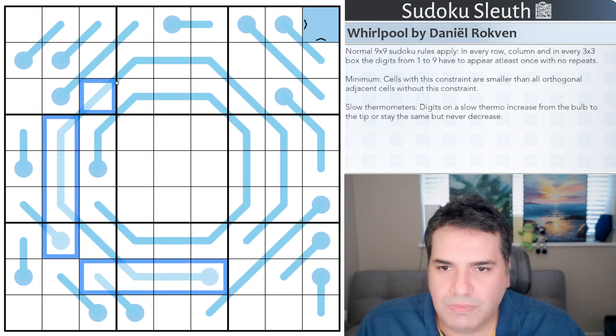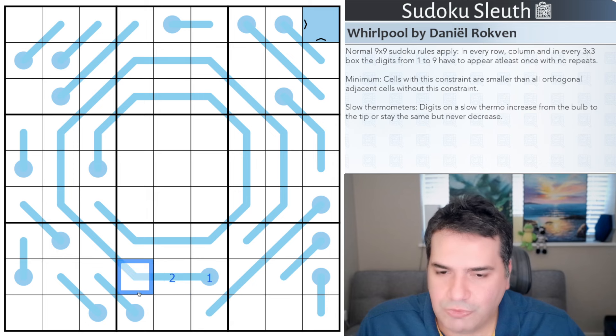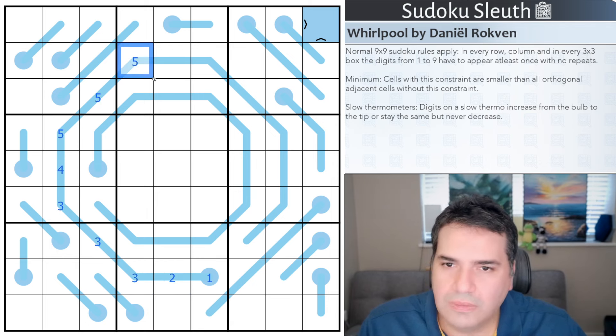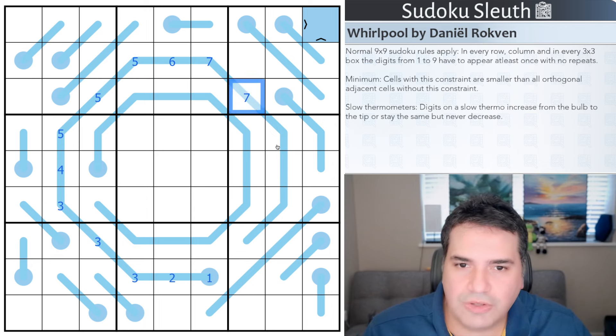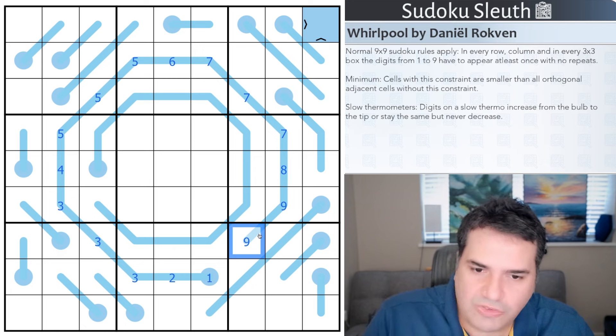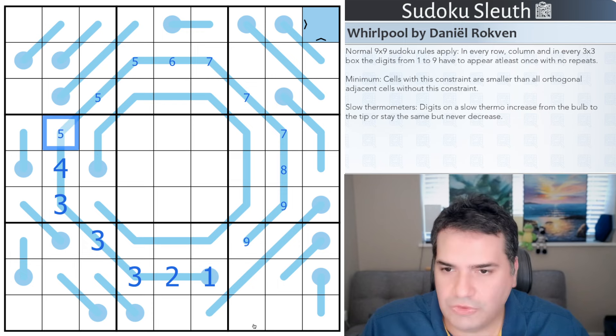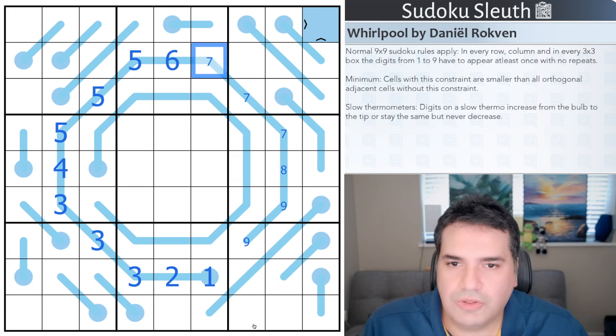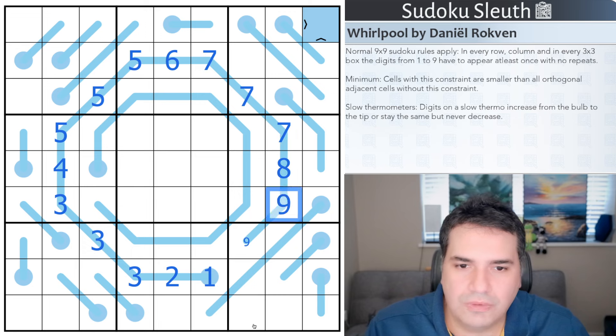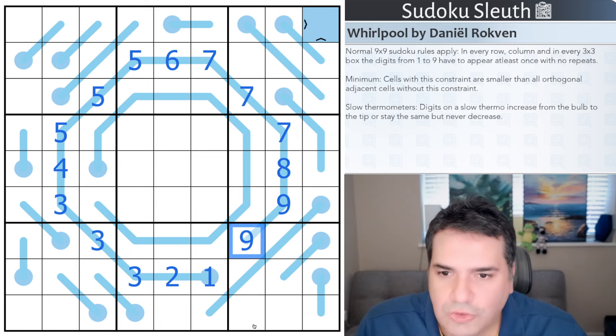So in particular, I'm very tempted by this outer slow thermal. That just looks, if I go for minimums for a second, even that feels tight. Is that even going to work? Yep, it works just. So that's forced. And it's not even 30 seconds and we've got tons of digits. So that's a good puzzle for a Monday.